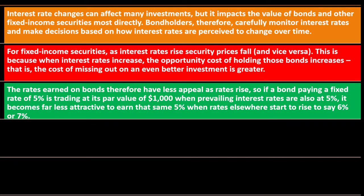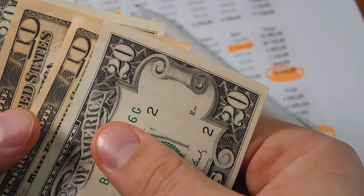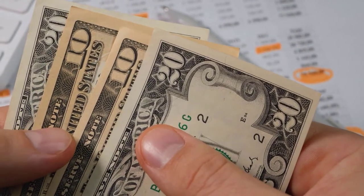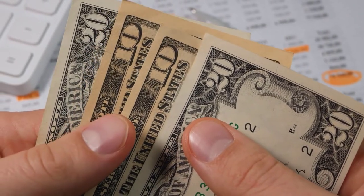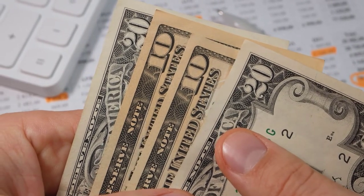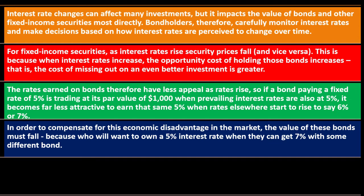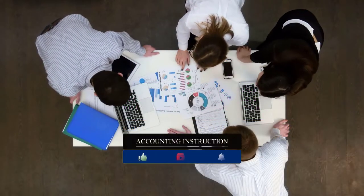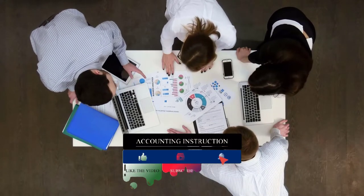For example, if a bond paying a fixed rate of 5% is trading at its par value of $1,000 when prevailing interest rates are also at 5%, it becomes far less attractive to earn that same 5% when rates elsewhere start to rise to 6% or 7%. If you have an investment giving you a fixed return of 5%, that might be great if that's the market rate. But if other investments are now earning 6% or 7% and you have money freed up, it might be better to put it in those other investments. To compensate for this economic disadvantage, the value of these bonds must fall, because who will want to own a 5% bond when they can get 7% elsewhere? We can talk more about bond pricing, which gets a bit complex, and may dive into that later.